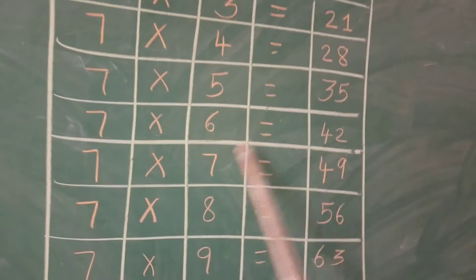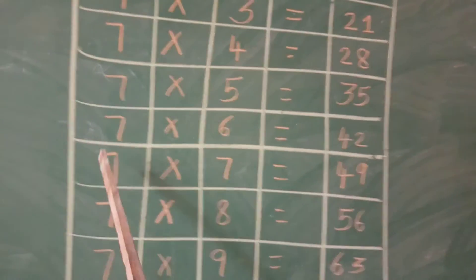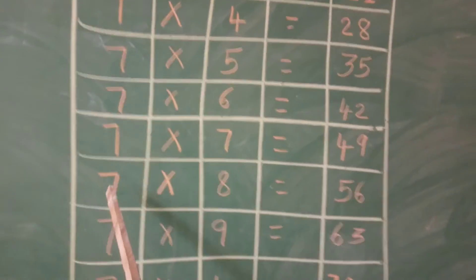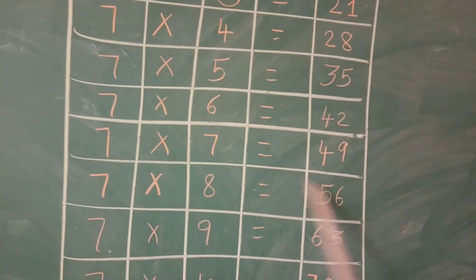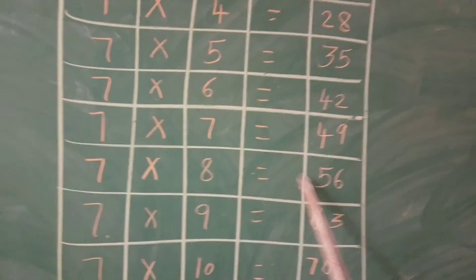7 into 7 is equal to 49. 7 sevens are 49. 7 into 8 is equal to 56. 7 eights are 56.